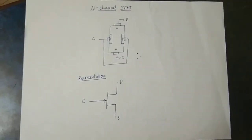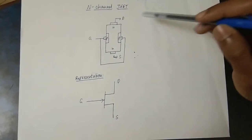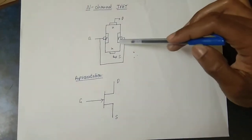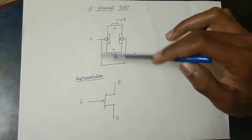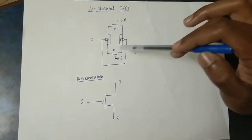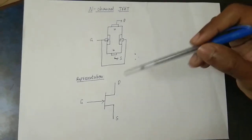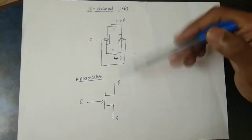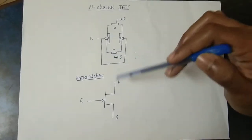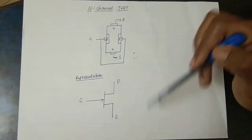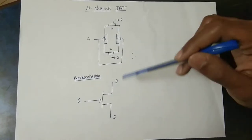The structure of JFET has two P-type layers surrounding the N-channel, forming the gate. There are two gate connections that are shorted together, along with the drain and source terminals.